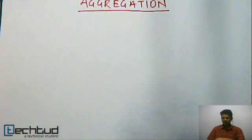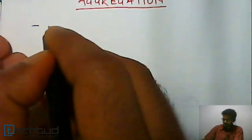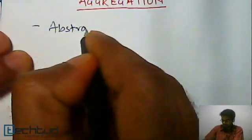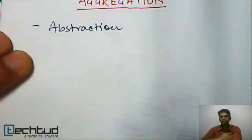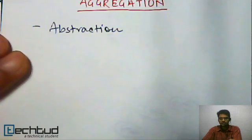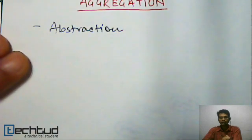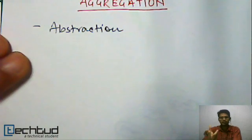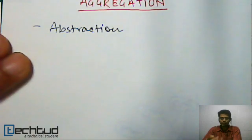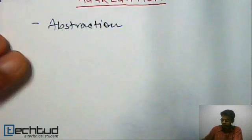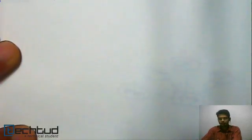Aggregation is an abstraction basically — an abstraction through which we can represent relationships as a higher level entity. In our ER diagram we don't have a way to represent relationship among relationships. We cannot represent relationships among relationships, and for that matter what we use is aggregation. The limitation of ER diagram is we cannot represent relationship among relationship.